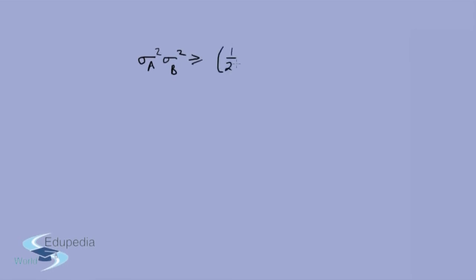So finally: sigma A squared times sigma B squared is greater than or equal to (1/2i)² times [A, B]². If the commutator of two operators is zero, then there is no uncertainty principle between them. But if the commutator between two operators is non-zero, then there is an inherent uncertainty — you cannot determine the values of both of them simultaneously.